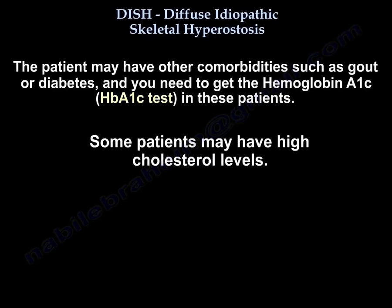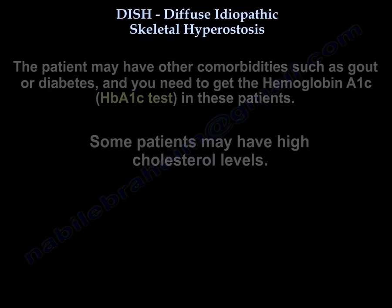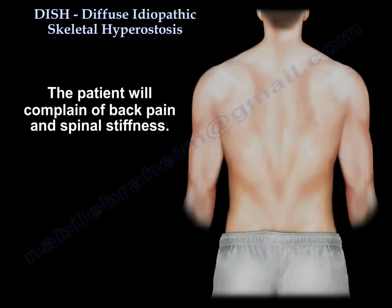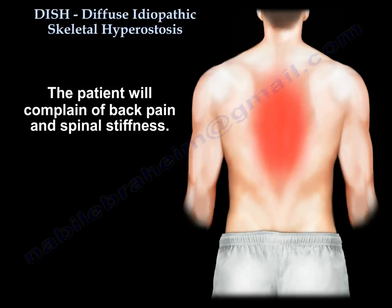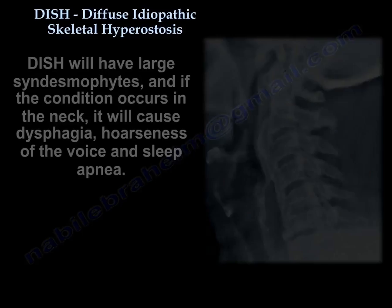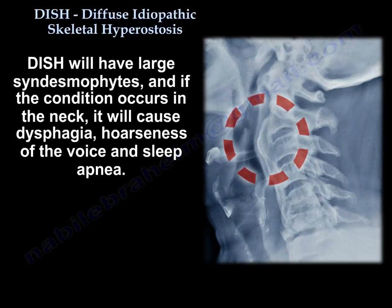The patient may have other comorbidities such as gout and diabetes — you need to get the hemoglobin A1C in these patients. Some patients may have high cholesterol levels. The patient will complain of back pain and spinal stiffness. DISH can produce large syndesmophytes, and if it occurs in the neck it will cause dysphagia, hoarseness of voice, and sleep apnea.